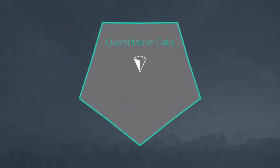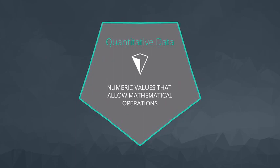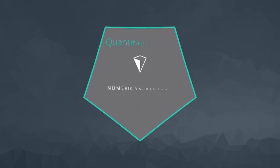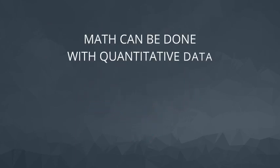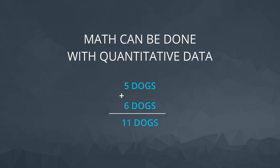Quantitative data takes on numeric values that allow us to perform mathematical operations. In the previous example, we saw this with the number of dogs. If I see five dogs on Monday and six dogs on Tuesday, I've seen a total of 11 dogs so far this week.